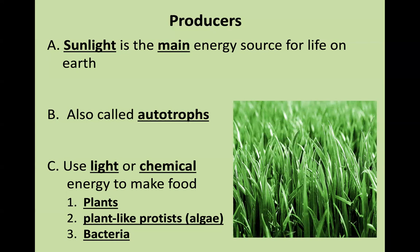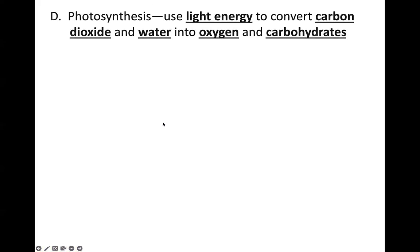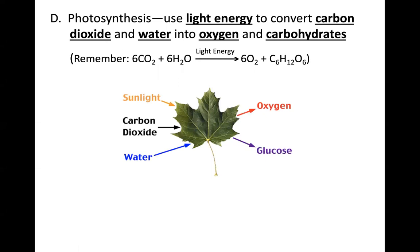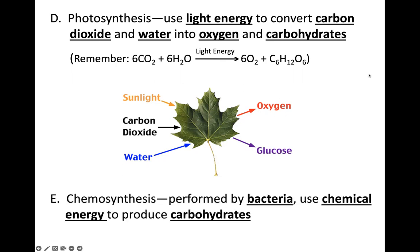We're going to look at this flow of energy as we consider our interactions with our environment and this interdependent relationship. When we look at the food chain, the food web, and the energy pyramid, we're going to see a one-way directional flow of energy starting with the sun, down to producers, and over to consumers. Photosynthesis is a necessary process for producers to create their own food. They capture sunlight energy and convert carbon dioxide and water into oxygen and carbohydrates. Glucose is one of the carbohydrates we use as our preferred energy source.